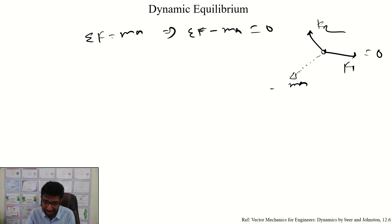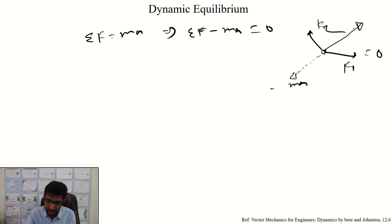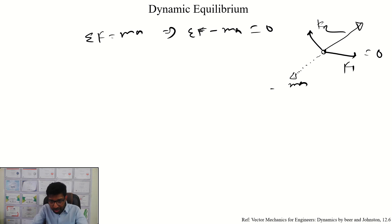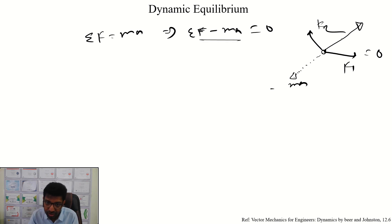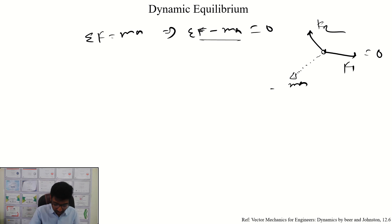Basically, the resultant is the same magnitude but in the opposite direction. The resultant represents the equilibrium position — this is the concept of dynamic equilibrium.